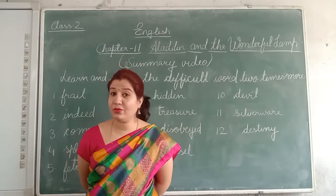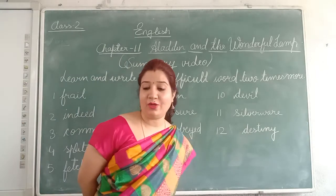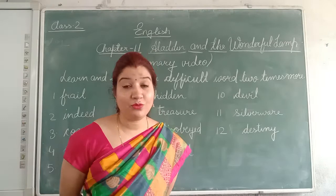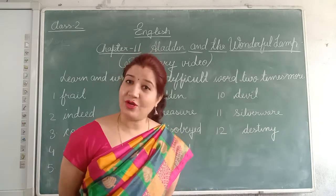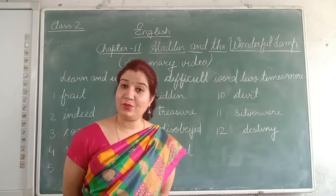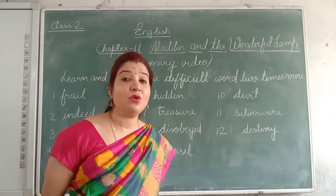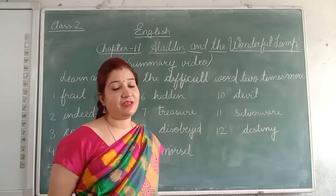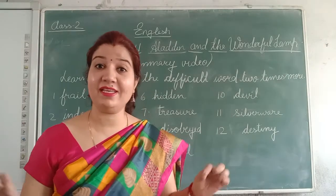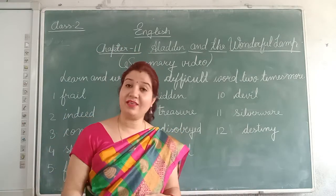Now students, do you know from where do we get cotton? Cotton is a natural fiber and we get cotton from the cotton crops. Cotton clothes are made from cotton. Farmers grow cotton in their fields and when the time is right, they harvest the cotton and then that raw cotton is sent to the industries, where the cotton is spun in the form of thread, and that is called yarn.